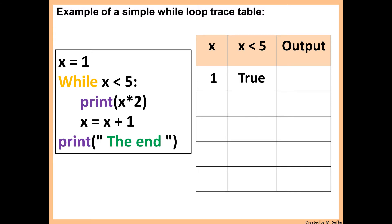If it's false, you do not enter the loop at all. It says print x times 2, so x times 2 — the output will be 2, because 1 times 2 is 2. Then x is equal to x plus 1, so x will increase by 1. Then we go back to the start of the loop, so while x is less than 5.